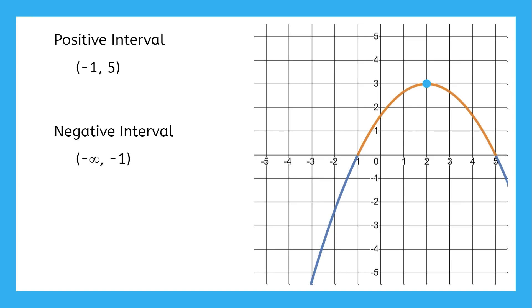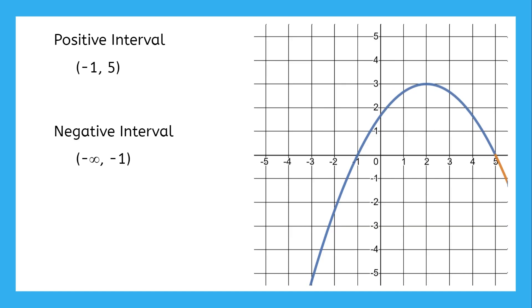Finally, after five, we see that small portion that's back in the negatives, so we add a second negative interval starting at five and continuing forever to the right, or positive infinity.